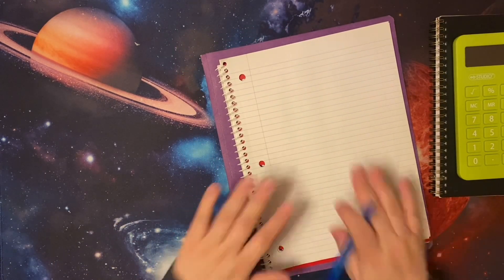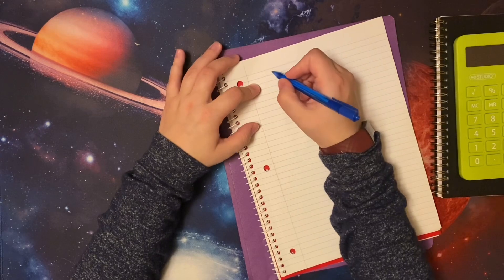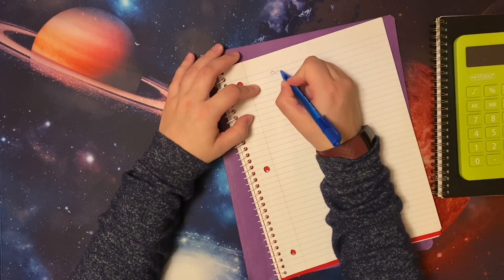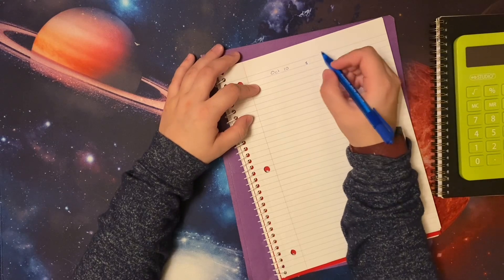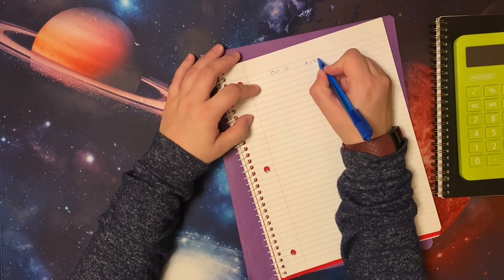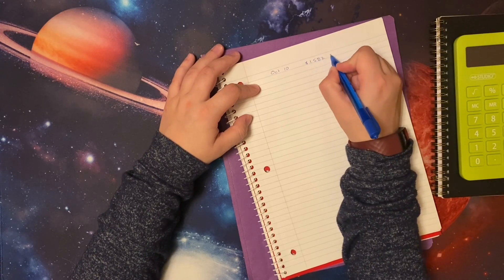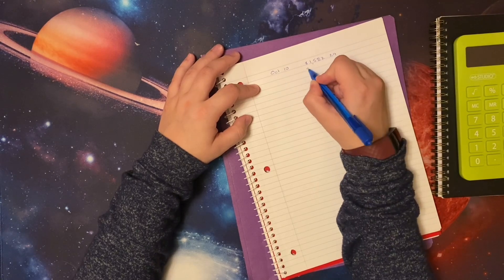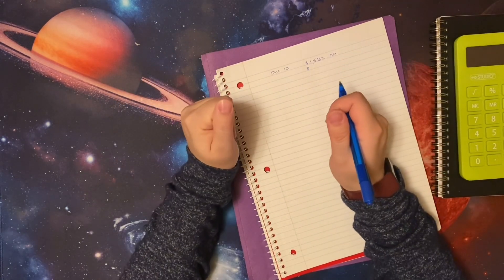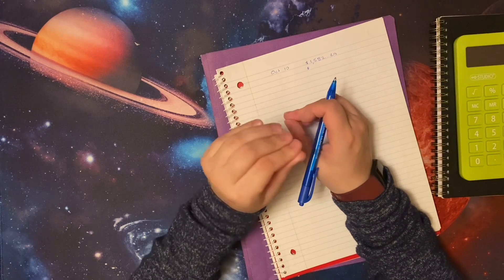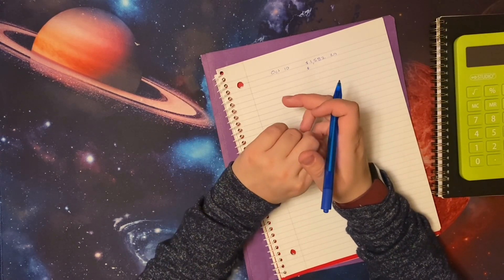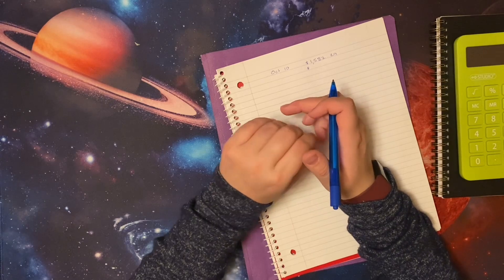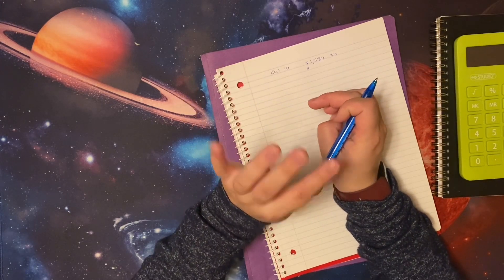Today we are going to be working with a total amount of $1,582.29. The reason it's so high is because I did work nine hours of overtime. I had a very exhausting week last week.